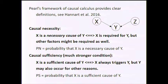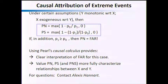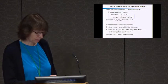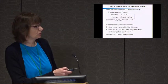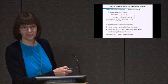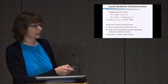Causal sufficiency is a much stronger condition: x is a sufficient cause of y if and only if x always triggers y, but y may also occur for other reasons. If CO2 forcing reaches a certain level, it would mean I always have a heat wave — winter and summer — which is clearly ridiculous for this example, so PS would be very close to zero. PS is always going to be much lower than PN. Under certain assumptions — that y is monotonic with respect to x and x is exogenous with respect to y — I get simplifications, and if p1 ≥ p0, then PN equals one minus p0 over p1, which is our FAR value. So FAR is actually the necessary causation probability, giving us a precise interpretation of what FAR means.